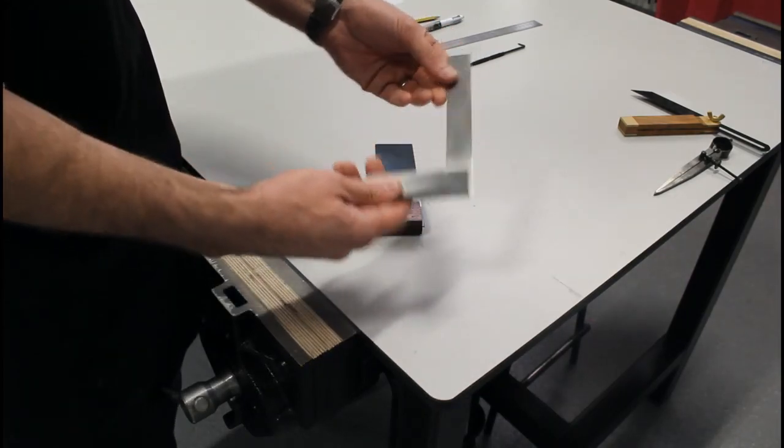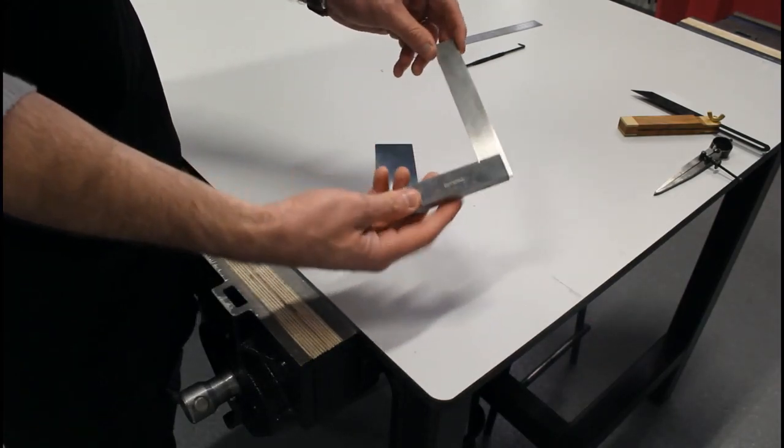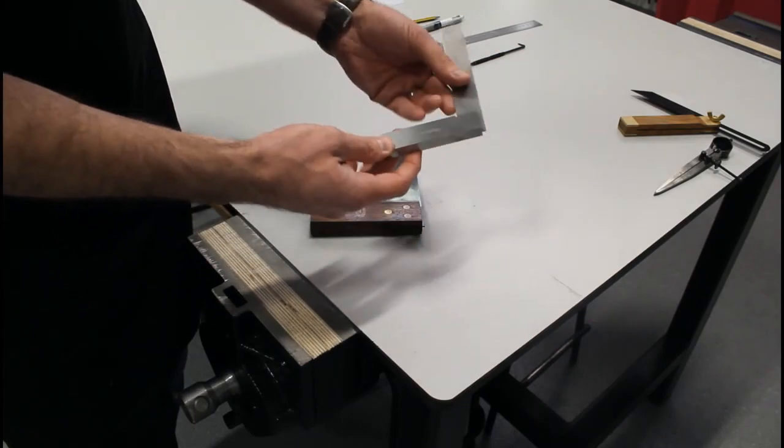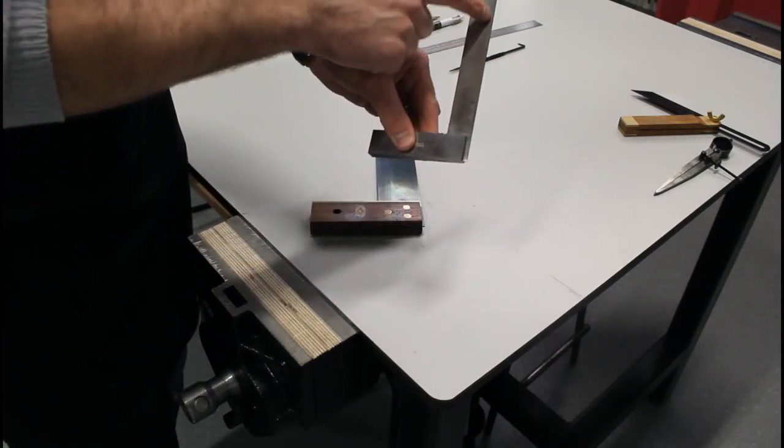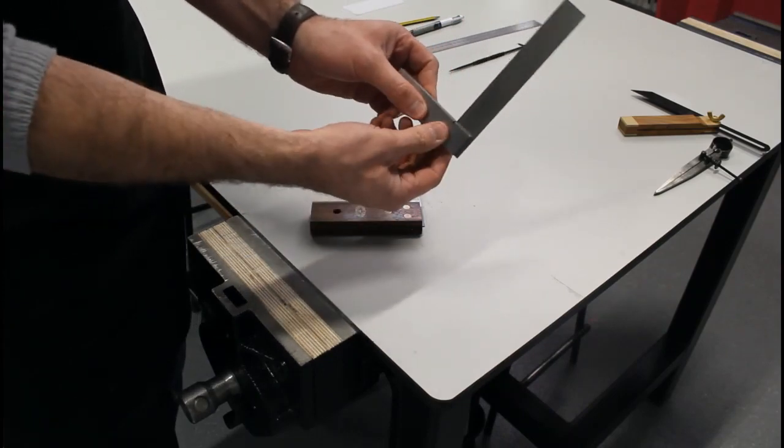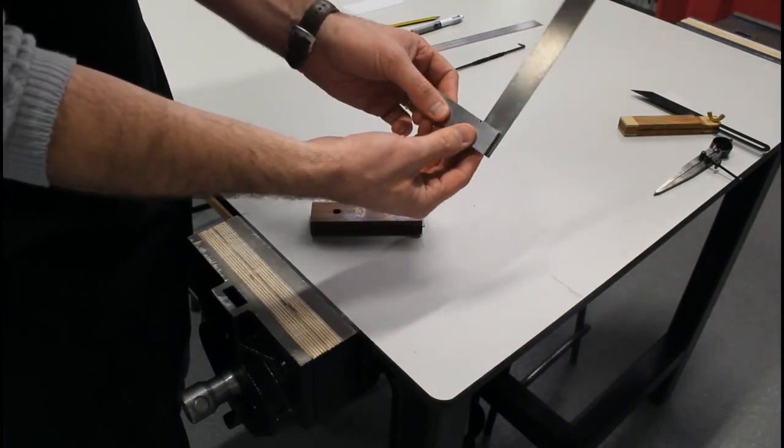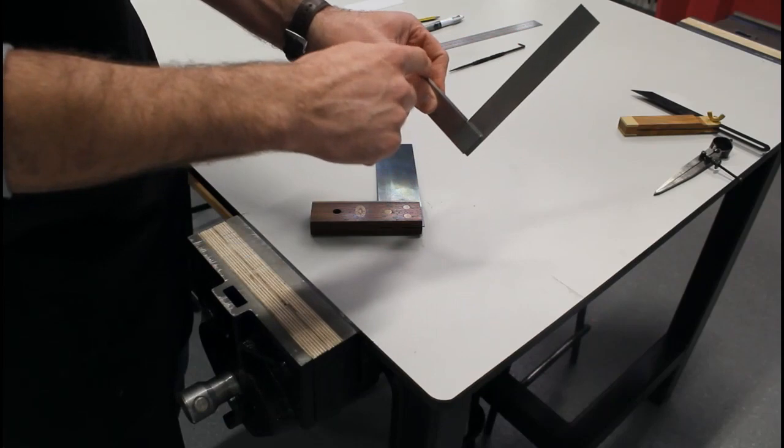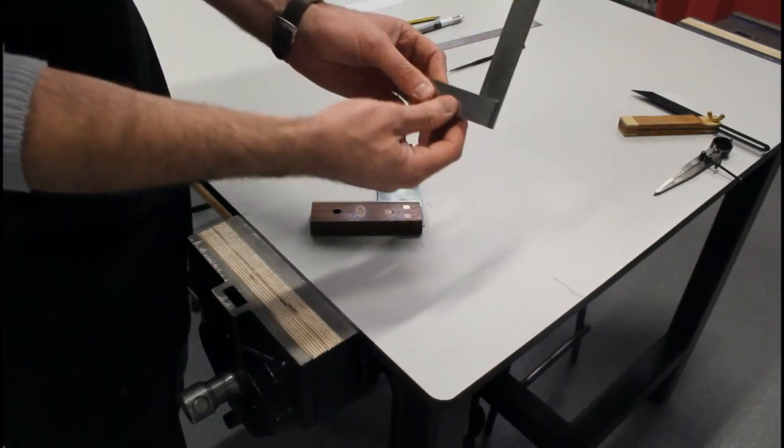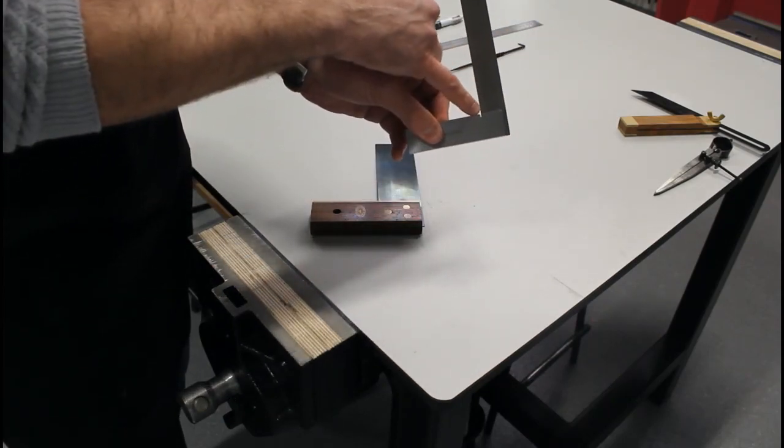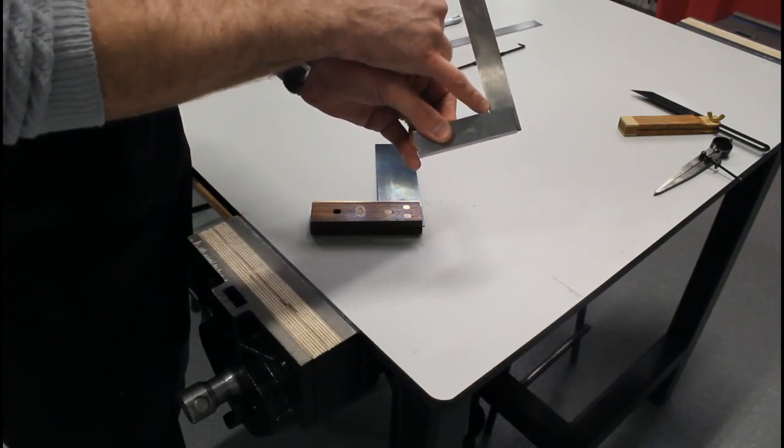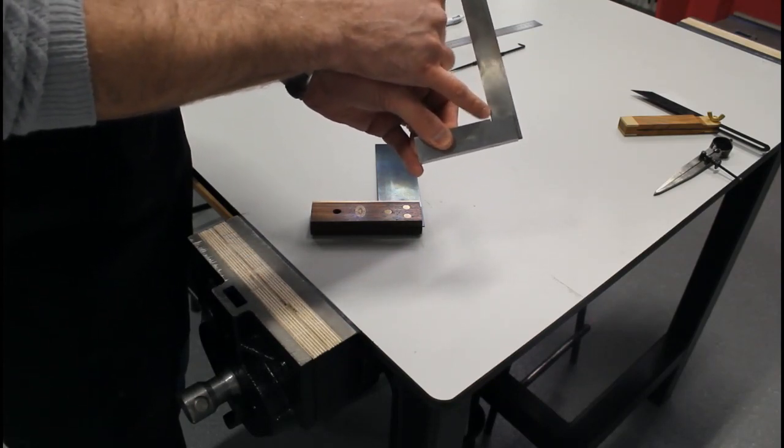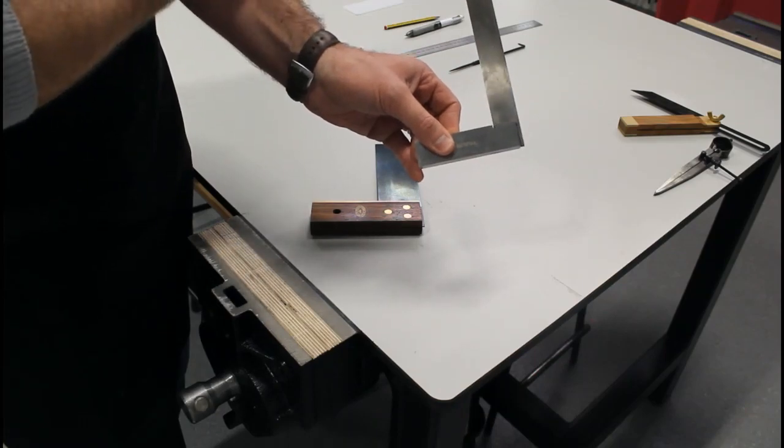This is also a square, but it's known as an engineer's square. The stock of this is steel and the blade is steel as well. Like the trisquare, this engineer's square is true at 90 degrees. You'll also notice a slot in the edge of this one that allows your scribe to start exactly from point and scribe out from it.